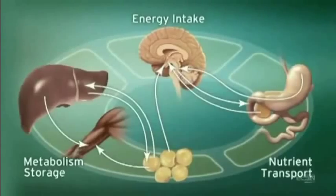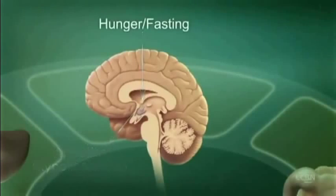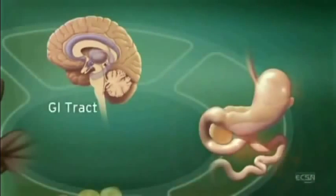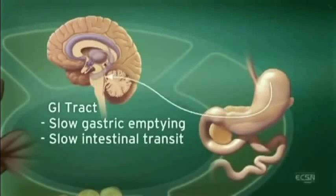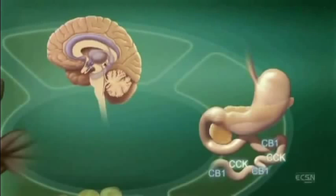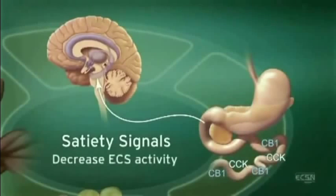Endocannabinoid system activity in the central nervous system regulates food intake. For example, ECS stimulation by hunger and fasting signals stimulates appetite and increases the palatability of food. Endocannabinoids slow gastric emptying and GI transit, and appear to stimulate secretion of ghrelin, a neuropeptide that increases appetite and food intake.